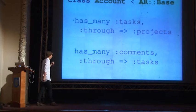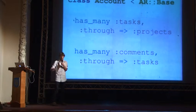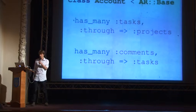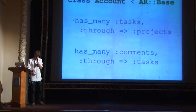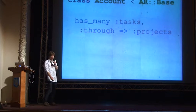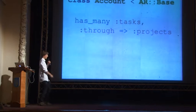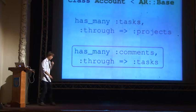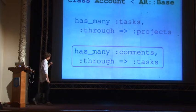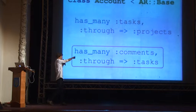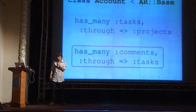It annoyed me, so I thought, okay, I'm going to implement this. This is a normal through association — we've all seen this. And then this is an example of what doesn't work in Rails 3: it goes through the tasks association, and tasks there already goes through something else.